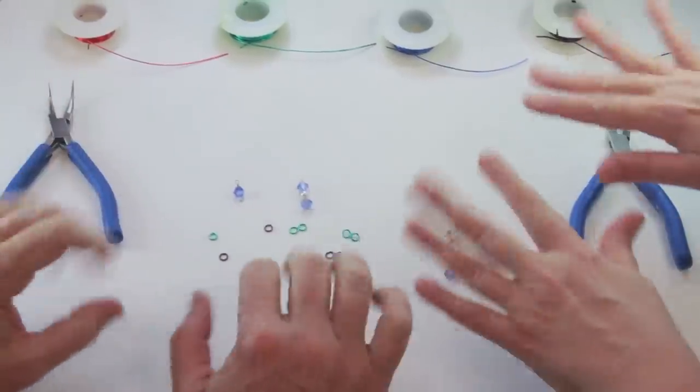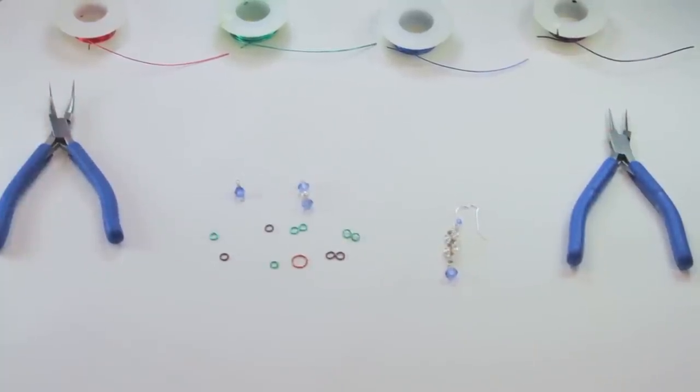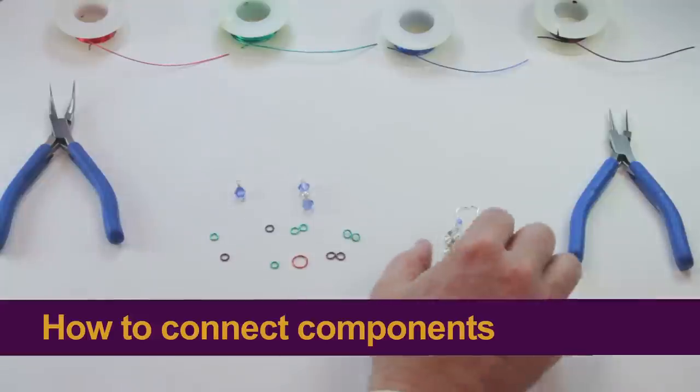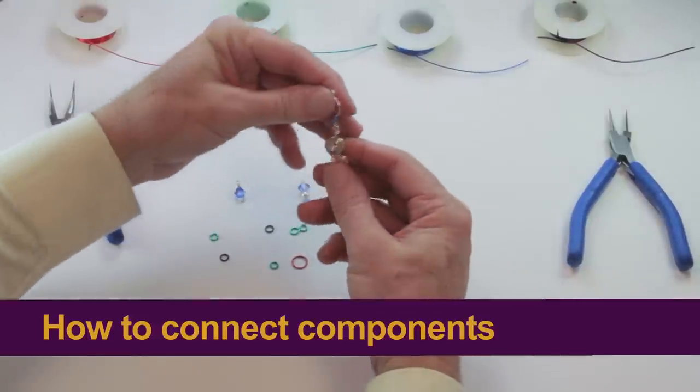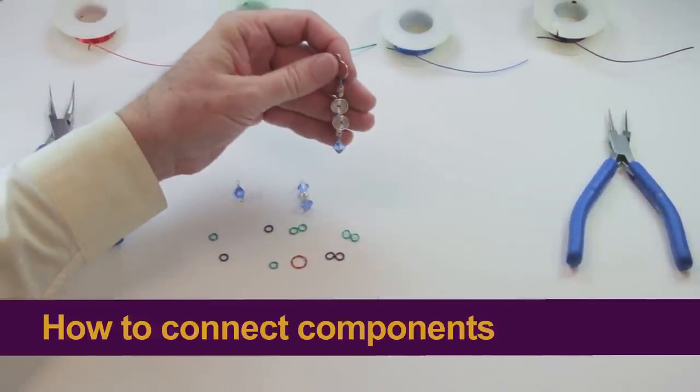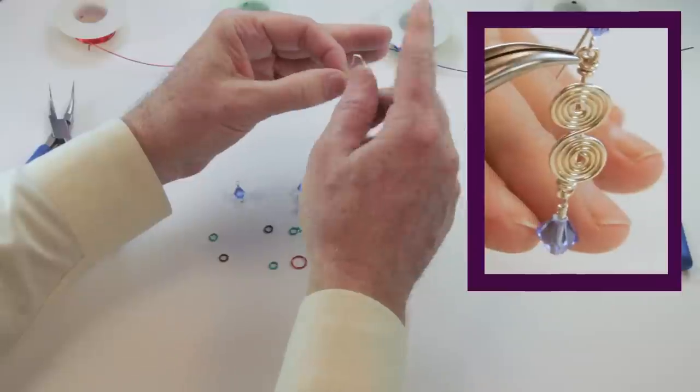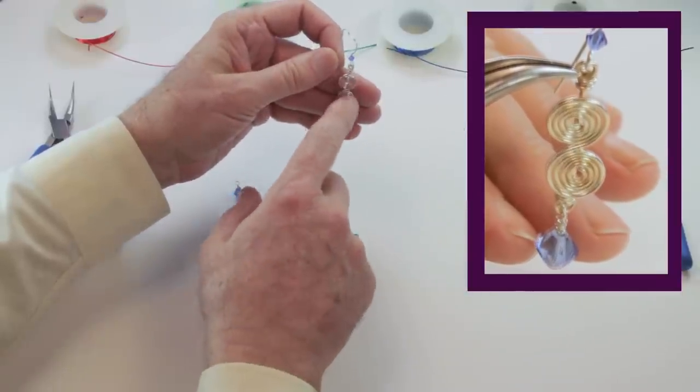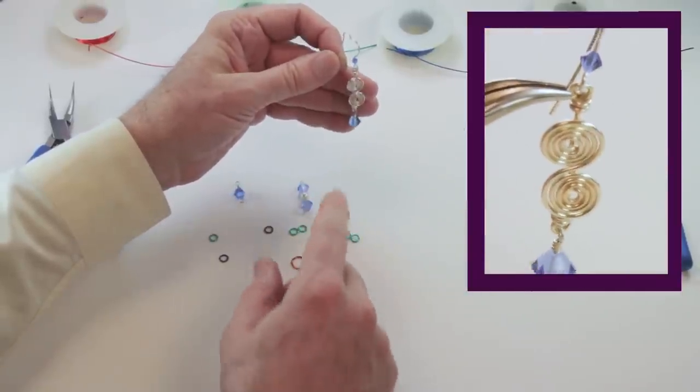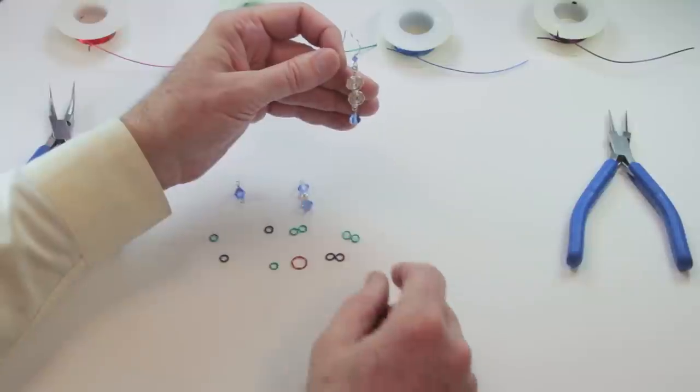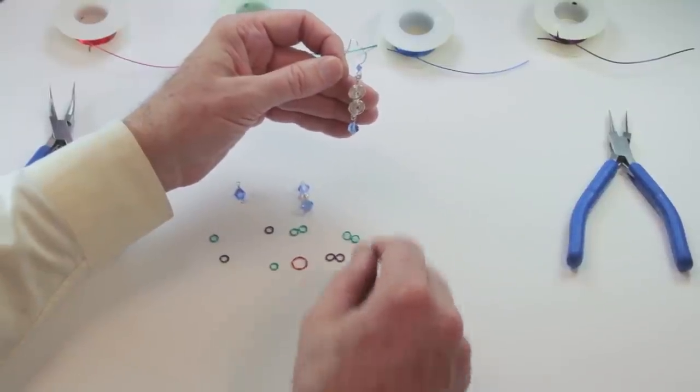Good morning, this is Talking Hands again. I'm Gary Helwig and Suzanne Helwig. What we're going to show in this video is how to connect components. You see an earring here, and the ear wire finding that we made is connected to the earring body. We're going to show you several different ways that you can connect components together like that.